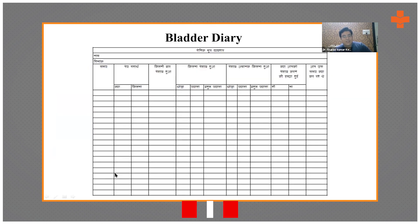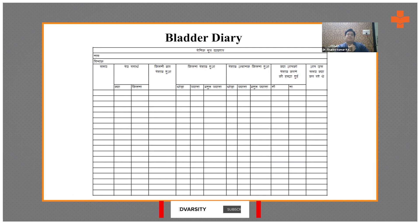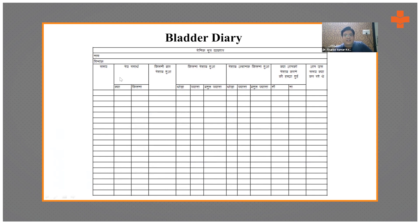The patient is also asked to maintain a bladder diary. This is an important aspect of rehabilitation because it engages the patient in their own care — they are not a passive participant; their role is very important. Every time the patient urinates, they should record details in the diary.